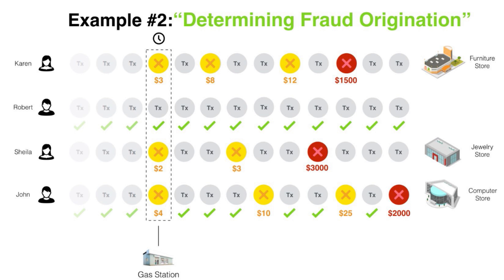Another example is determining the origin of fraud. Let's say John reports a $2,000 fraudulent computer purchase to the credit card company. They look back at his previous smaller transactions and find additional fraudulent transactions starting with a small purchase at a gas station. The suspect additional fraud emanated from this gas station, so the card issuer looks at all of the transactions at the gas station within a time window. After looking at Sheila's transactions, they find a similar unusual large purchase at a jewelry store. Sheila confirms this is fraud as well, and also confirms other fraudulent transactions. A similar pattern also then emerges with others like Karen. With this graph-based pattern analysis, the credit card company was able to quickly determine fraud origination and find cases of unreported fraud, helping them shut this fraudster down before more damage was done.